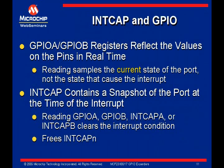There are two methods to determine the state of the ports. First, the GPIO registers always reflect the current state on the port in real time. Second, the INT-CAP registers reflect the state of the port when the interrupt occurred. The port registers always reflect the current value on the pin, and the interrupt capture register contains a snapshot of the port at the time of the interrupt.